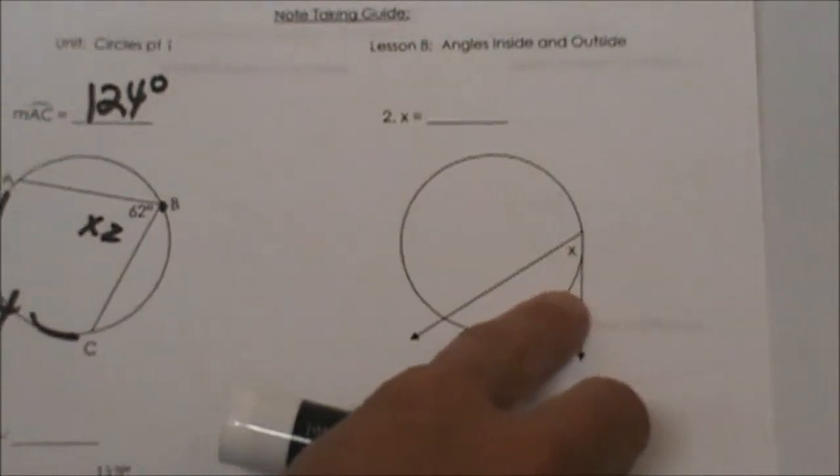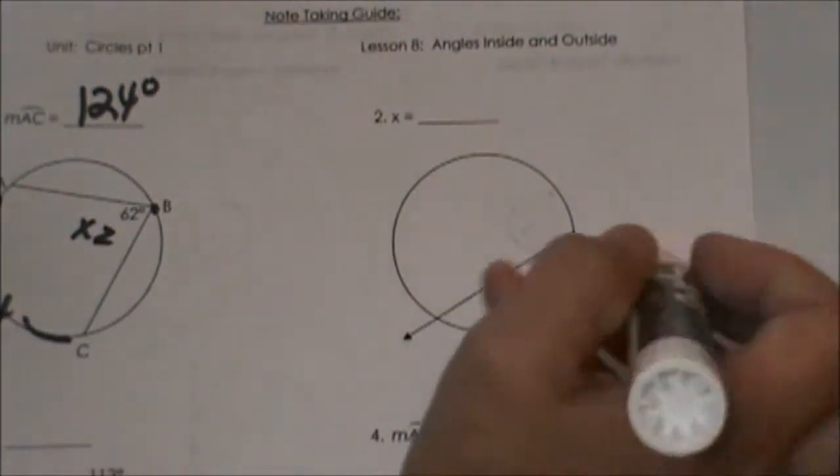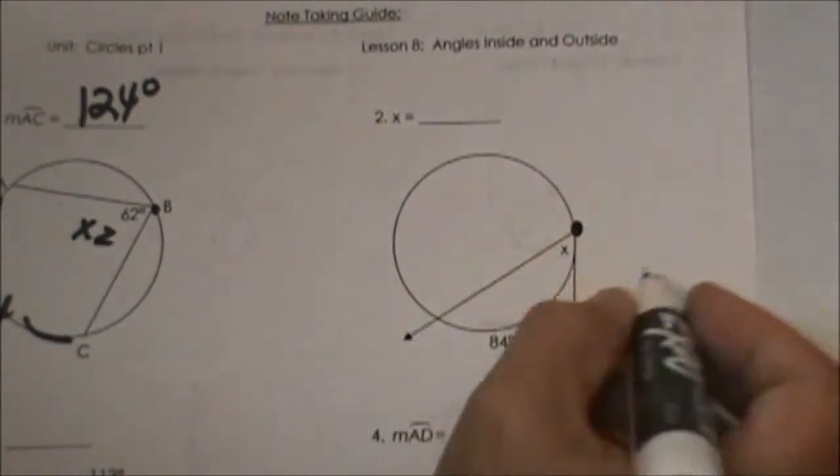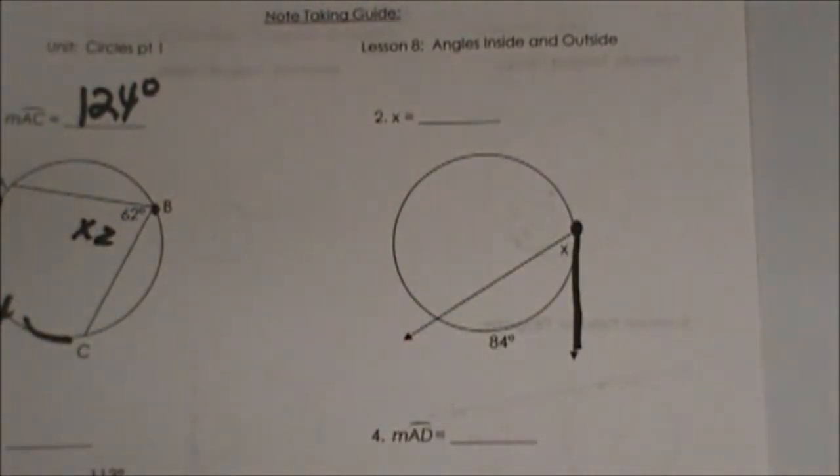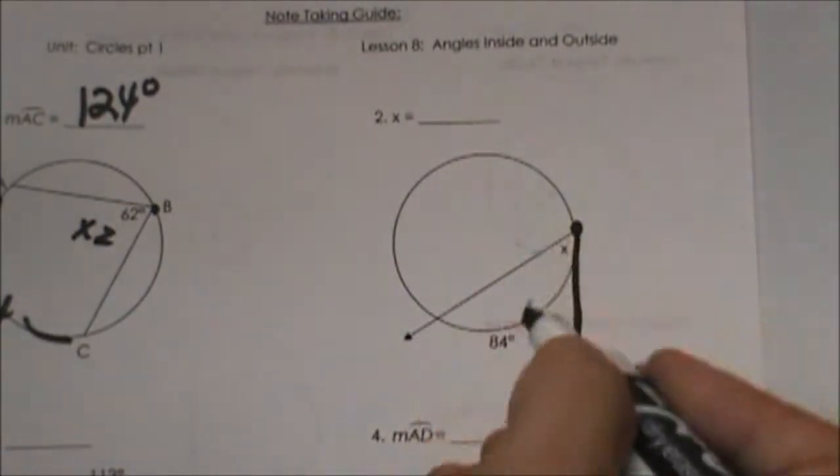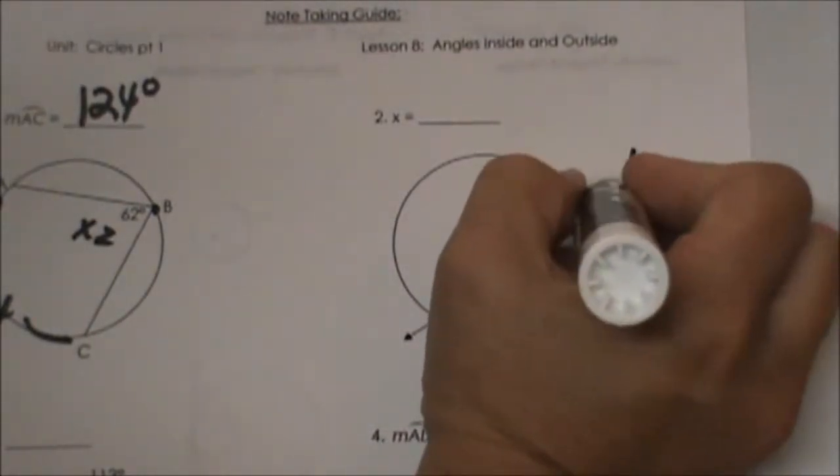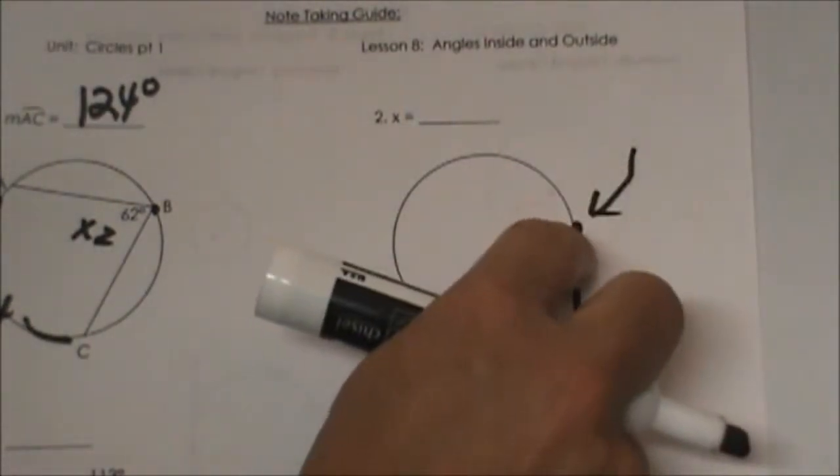How about this one? Where is the vertex? The vertex is on the circle but notice this is a tangent. That is what makes it a little trickier to see. You still use the same rule. All you are looking for is where is the vertex. The vertex is on the circle.